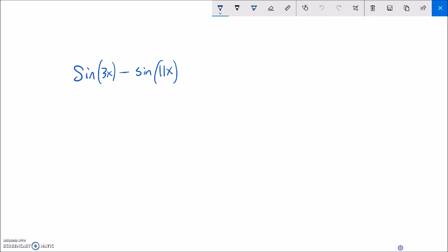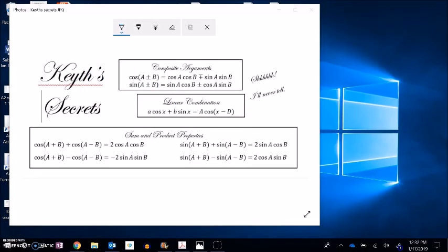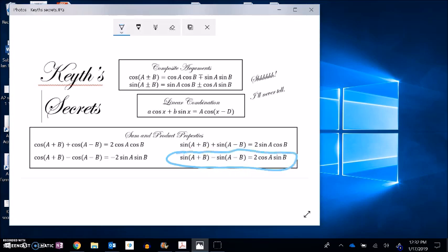I have sine minus sine. So let me look at what sine minus sine is. Sine minus sine goes to 2 cosine of the first, sine of the second. Notice this is A plus B and this is A minus B. I'm going to have to figure out what A and B are. They're masked inside these values.